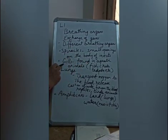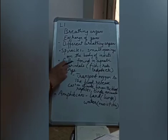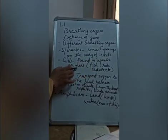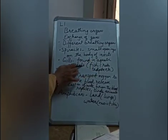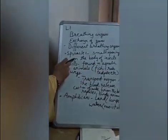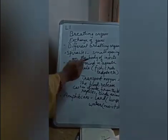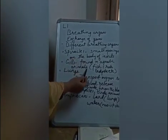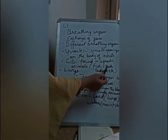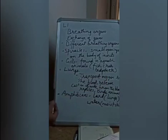Next is fishes — they breathe through the gills. All aquatic animals, that is animals living in water, breathe through the gills. Examples of aquatic animals include fish, crab, and tadpoles, etc.